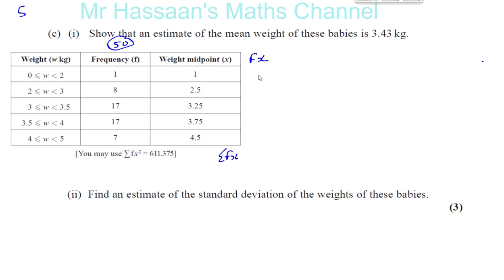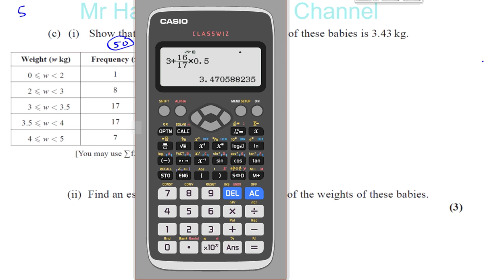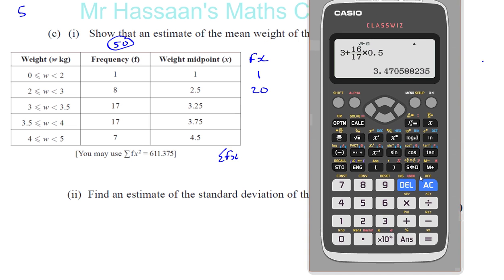So you have 1 times 1, which is 1. You have 8 times 2.5, which is 20. You have 17 times 3.25 — let's use the calculator here — 17 times 3.25, which gives you 55.25.